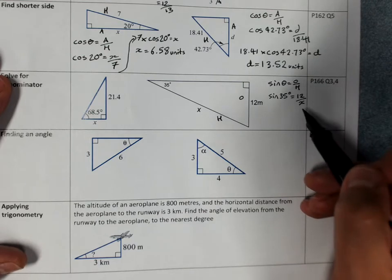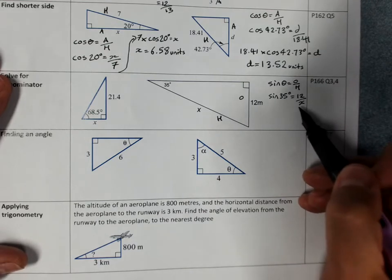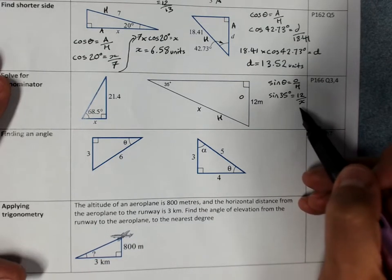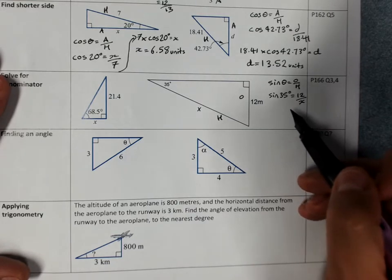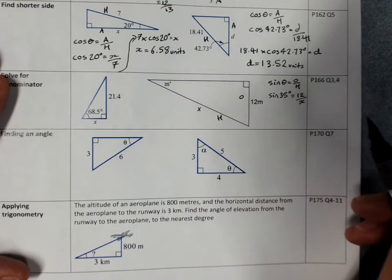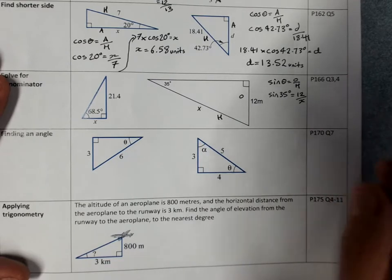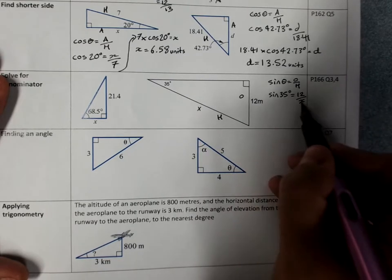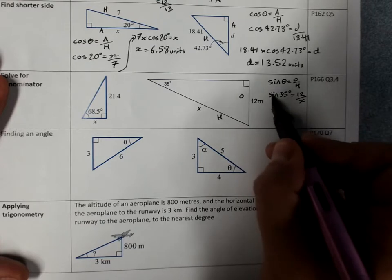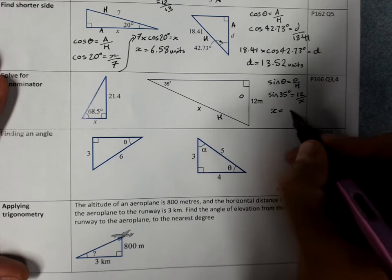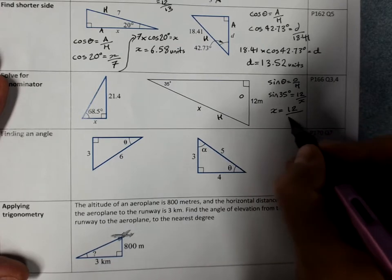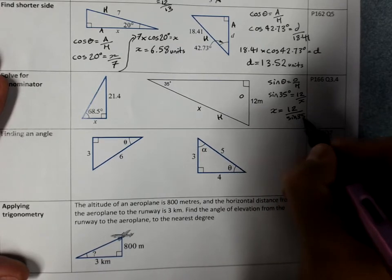This means there's a couple of different things that you can do. But what it will mean is that it will end up as a division, not a multiplication. One of the ways to remember it is that you're just swapping x and sine, cos, or tan of the angle. So that it will work out as x equals 12 divided by sine 35 degrees.